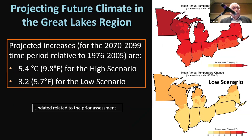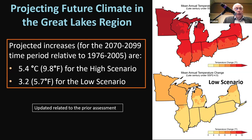Looking at projections for the end of the century — 2070 to 2099 relative to the current period — the high scenario gives a result of about 5.4 degrees centigrade increase, or 9.8 degrees Fahrenheit, comparable in warming to what we saw in cooling during the last ice age. The low scenario shows quite a bit smaller increase of 3.2 degrees centigrade or 5.7 degrees Fahrenheit, demonstrating the real benefits of mitigation and emissions reduction. Analysis of annual temperature changes shows higher latitudes experiencing more significant change relative to lower latitudes.